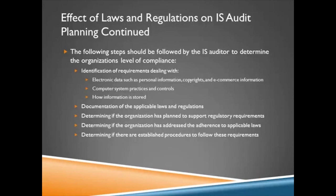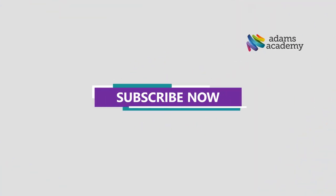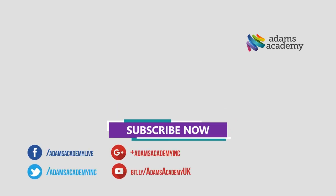We can look at some steps an IS auditor should follow to determine the organization's level of compliance. One is identification of requirements dealing with things like electronic data, personal information, copyrights, e-commerce information, computer system practices and controls, and how they store information. You should also be looking at documentation of applicable laws and regulations, determining if the organization is planned to support those regulatory requirements, and making sure the organization has addressed adherence to applicable laws with established procedures to follow those requirements.